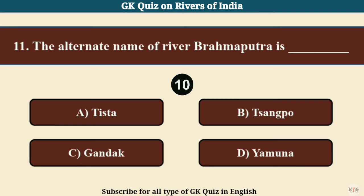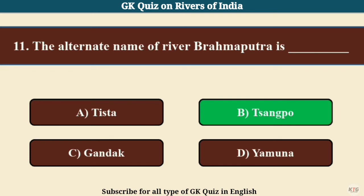Question No. 11. The alternate name of river Brahmaputra is? Answer B: Tsangpo.